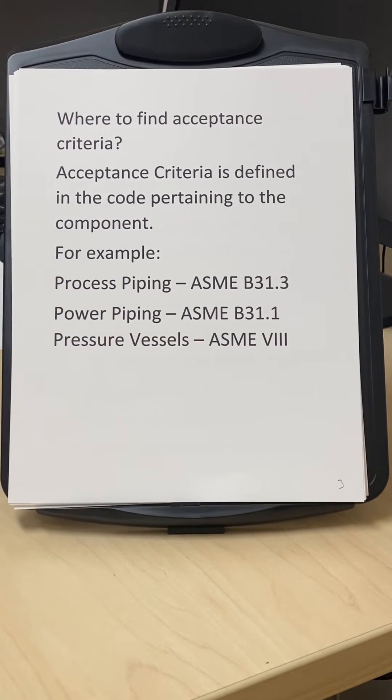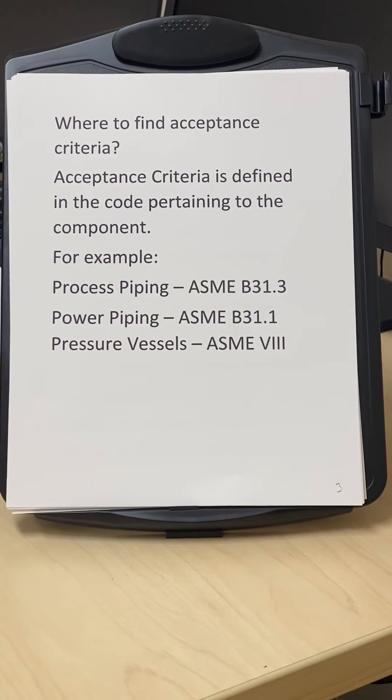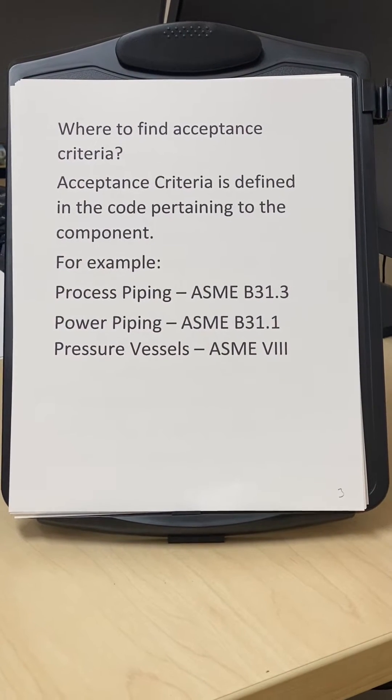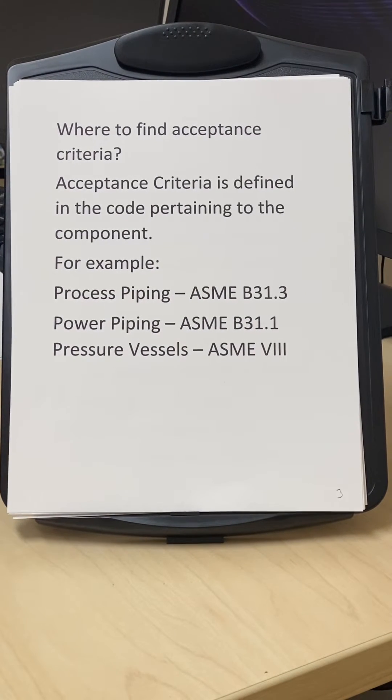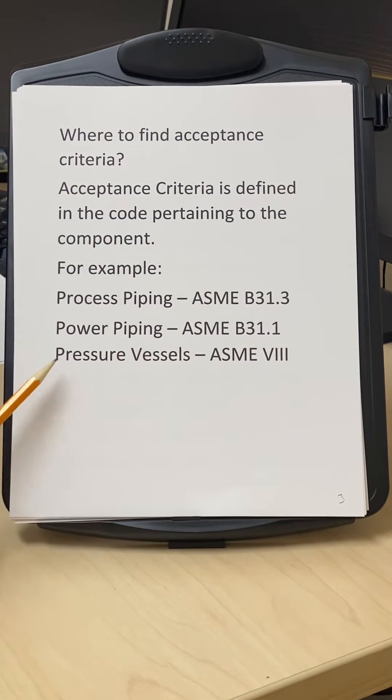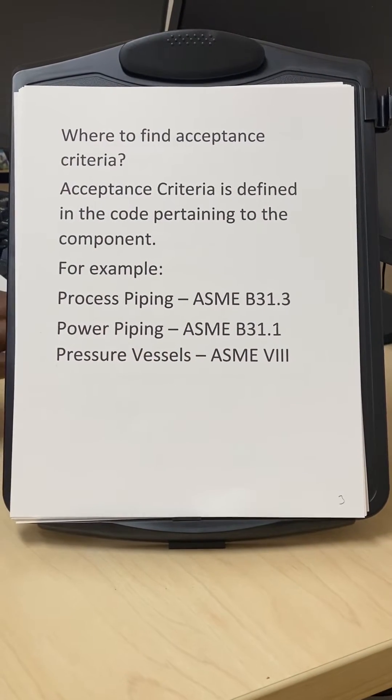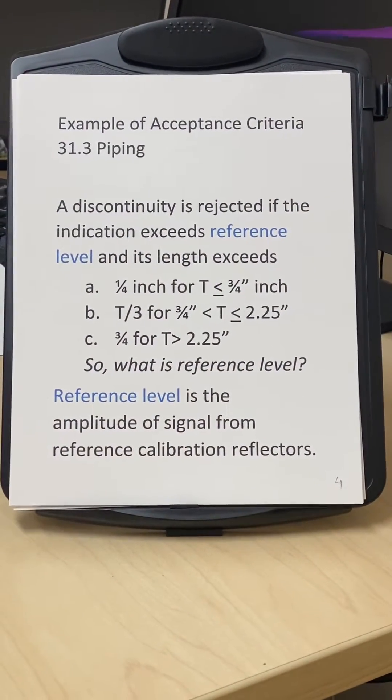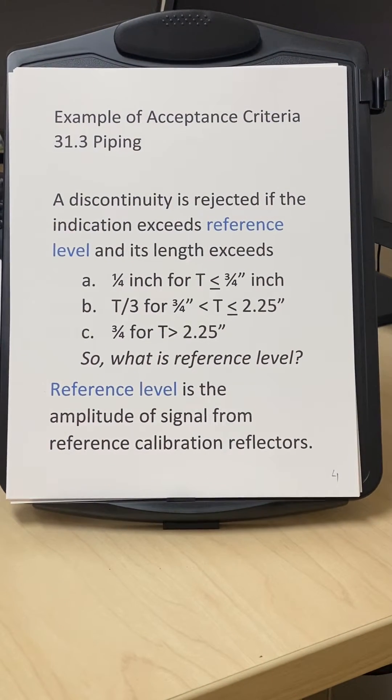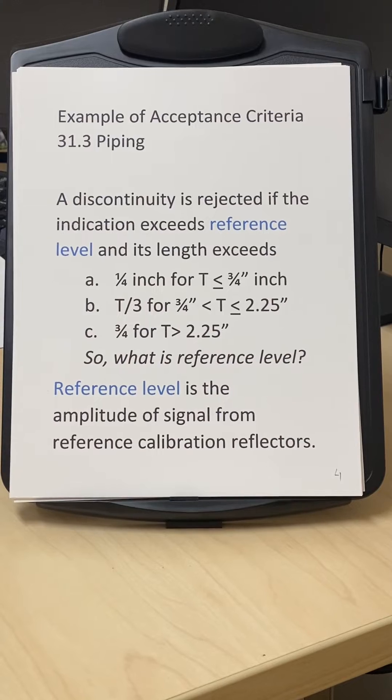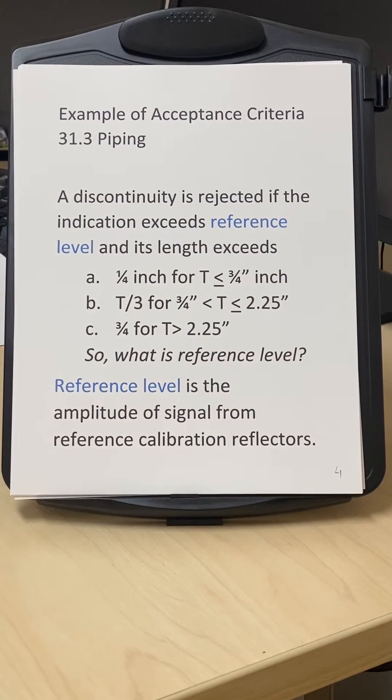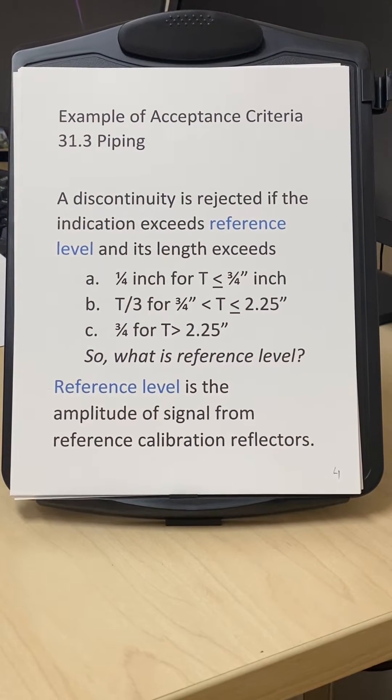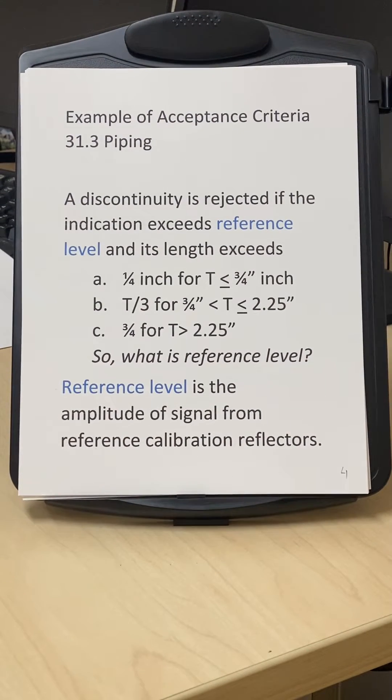Where do we find the acceptance criteria? The acceptance criteria is defined in the code pertaining to the component. For example, if you're doing process piping, it would be ASME B31.3, for power piping it will be 31.1, and for pressure vessels it will be Section 8. For B31.3 piping, a discontinuity is rejectable if the indication exceeds the reference level and its length exceeds this given length.